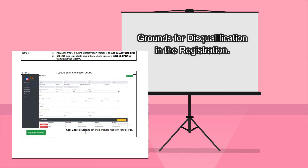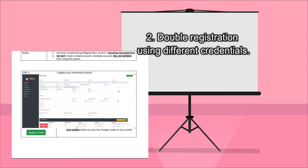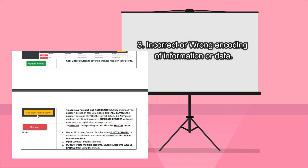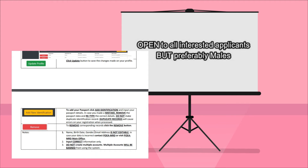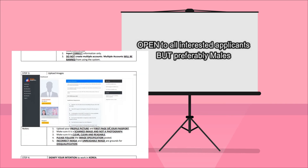There are important reminders about grounds for disqualification in the registration: 1. submission of false information and fake documents, 2. double registration using different credentials, 3. incorrect or wrong encoding of information or data. The online registration shall be open to all interested applicants, preferably males, because most of the jobs are described as 3D — dirty, difficult, and dangerous.